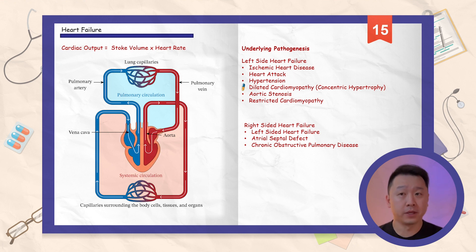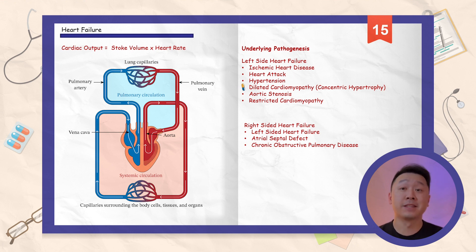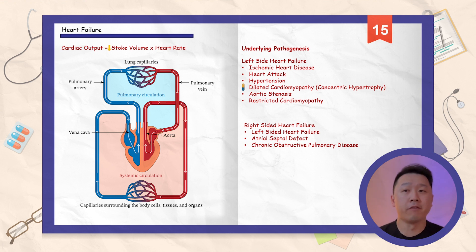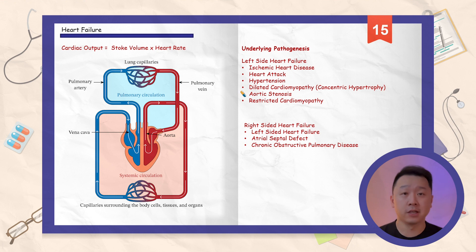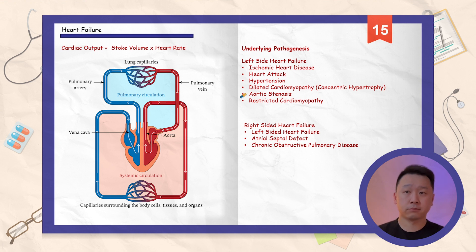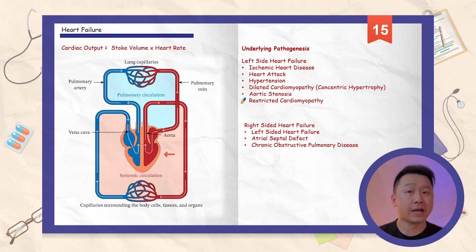In dilated cardiomyopathy or concentric hypertrophy, the overall size of the heart does not change, but there is a thickening of the organ cell wall, decreasing the filling volume and thus cardiac output. Aortic stenosis is the blockage of the aortic valve, leading to decreased diastolic volume and reduced blood pumped from the left ventricle. Restrictive cardiomyopathy is the inability of the myocardium to contract due to the stiffness and rigidity of the myocardial wall.